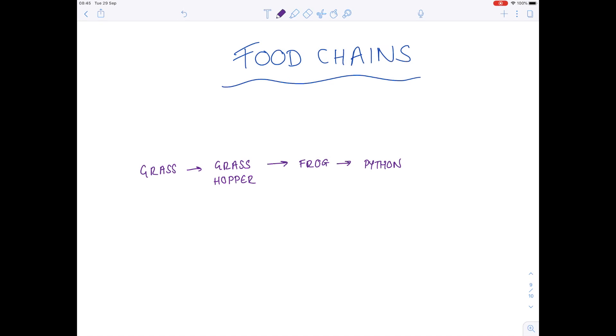Notice the direction of the arrow, which always shows the direction of energy flow. The grasshopper feeds on the grass, the frog feeds on the grasshopper, the python feeds on the frog. Each stage of a food chain is known as a trophic level, and each trophic level has a particular name assigned to it.